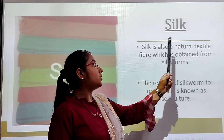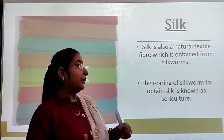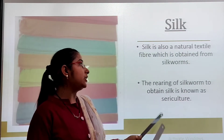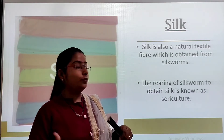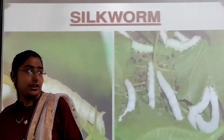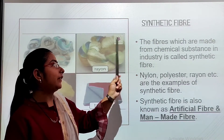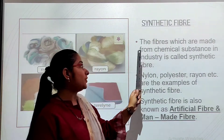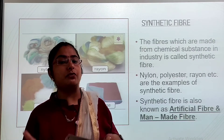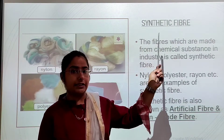Now silk. Silk is also a natural textile fiber which is obtained from the silkworm. The rearing of silkworms to obtain silk is known as sericulture. Now synthetic fibers: the fibers which are made from chemical substances in industry are called synthetic fibers. Synthetic fibers are obtained when natural fibers undergo chemical treatment in industries.